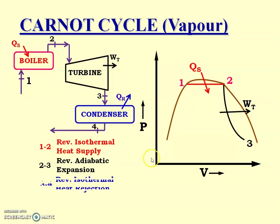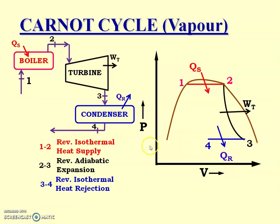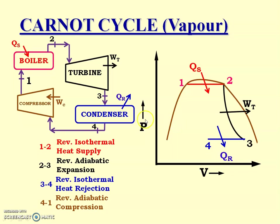The next process is 3 to 4, named isothermal heat rejection. As it is isothermal and pressure also remains constant, it is drawn as a horizontal line from 3 to 4, where heat is rejected. The last process in the compressor is reversible adiabatic compression, drawn as a curve from 4 to 1, where work is supplied.